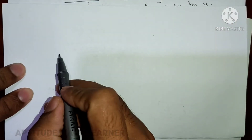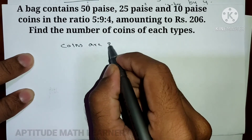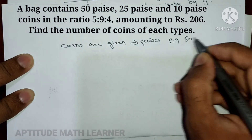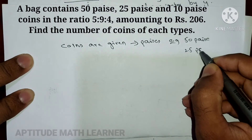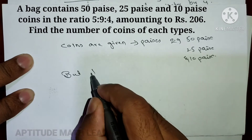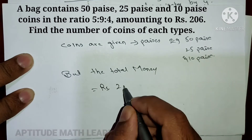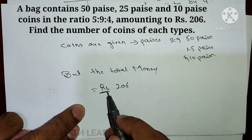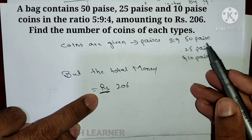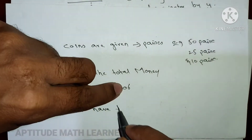One important thing — in the question, the coins are given in paisa: 50 paisa, 25 paisa, and 10 paisa. But the total amount given is rupees 206. Remember, the total money is in rupees.